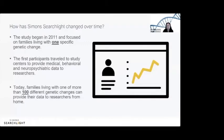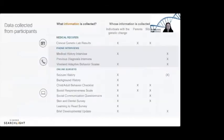We collect information in two ways: talking with genetic counselors on the telephone, and collecting some information online because we know people are busy. We're committed to doing this for the long haul, and I realize it's somewhat confusing about where you are in the process and what the overarching goal is — so I thought I'd explain the process of Simon Searchlight.